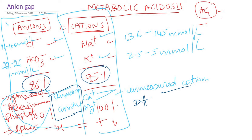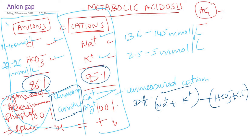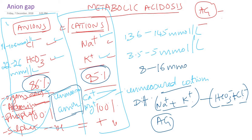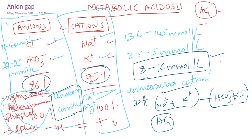How to calculate anion gap? It's very easy. We measure sodium and potassium as cations, and subtract bicarbonate and chloride. You add sodium and potassium, then add bicarbonate and chloride — subtract the second sum from the first. The normal anion gap is around 8 to 16 millimole per litre, on average 12 millimole per litre. Once again, there is no actual gap — it represents unmeasured anions.